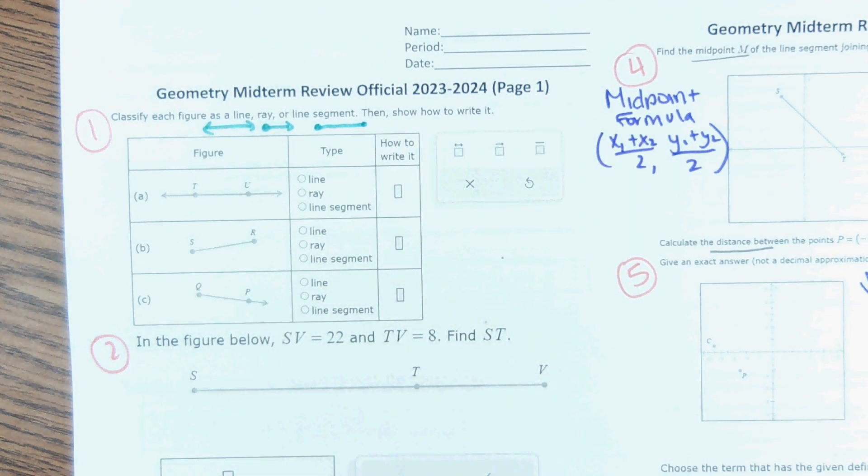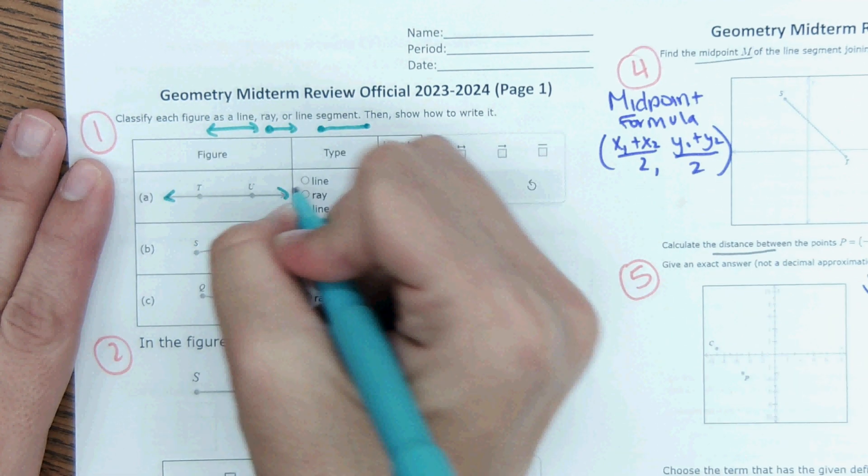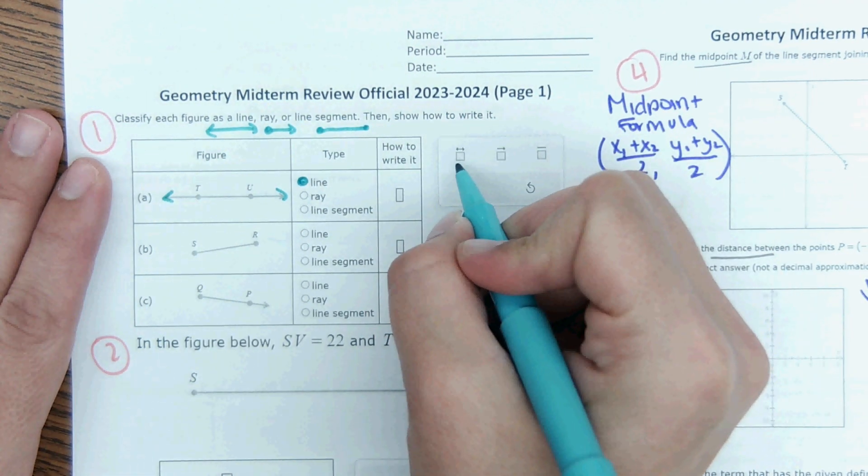So for the first one, it says this figure right here. What is it? A line, ray, or line segment? Because it goes on forever in both sides, it is a line. And then to write it, you would choose this symbol right here.